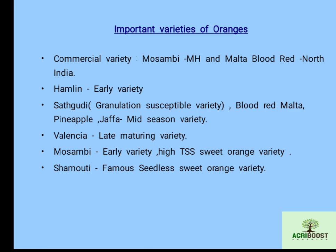Commercial varieties of orange: Mosambi and Malta Blood Red are prominent commercial varieties — Mosambi is popular in Maharashtra, while Malta Blood Red is popular in north India. Hamlin is an early variety. Mid-season varieties include Satgudi, Blood Red, Malta, Pineapple, Jaffa, and others. Satgudi is susceptible to granulation disorder. Valencia is a late-maturing variety. Shamuti is a famous seedless sweet orange variety.